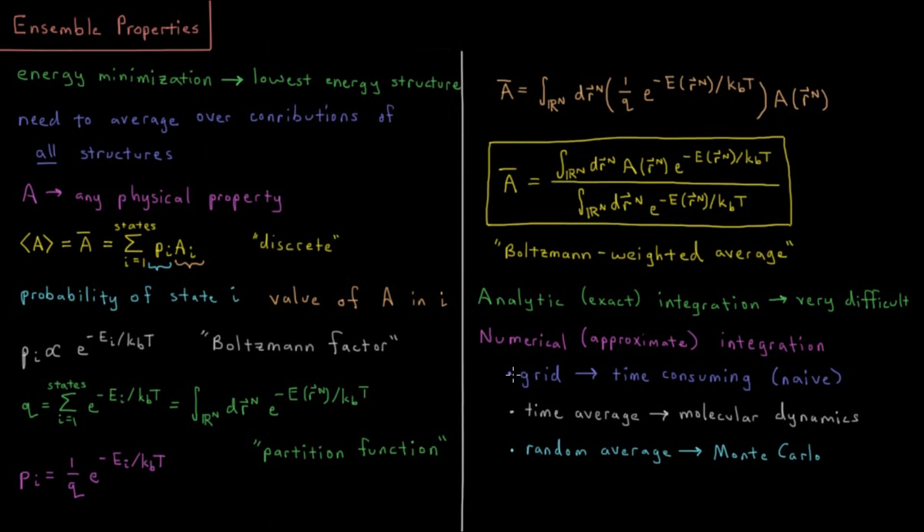We could integrate them on a grid. Choose a set of points to represent each of the dimensions, and then we could turn this into a sum and just average over the sum over all of our grid points. But if you have anything more than a few dimensions, then the number of points starts increasing exponentially.